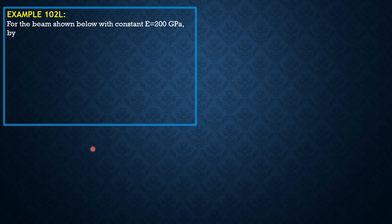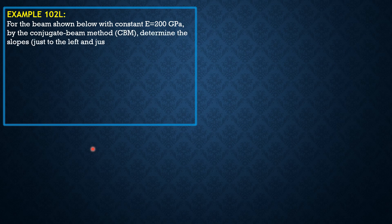For the beam shown below with constant E of 200 gigapascals, by the conjugate beam method, determine the slopes just to the left and just to the right of B, and the deflection at B.